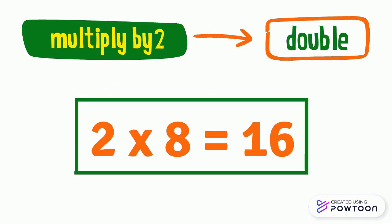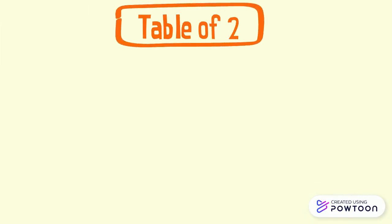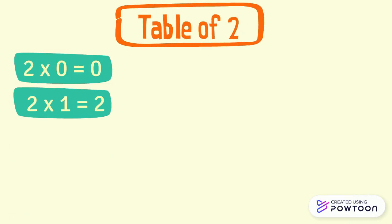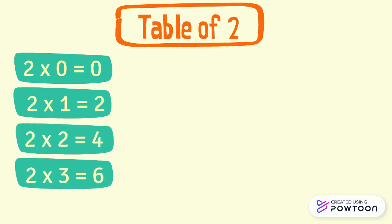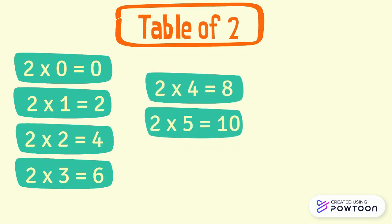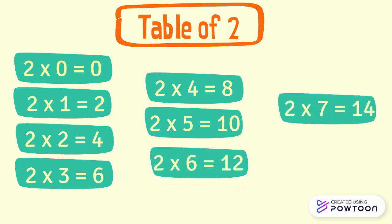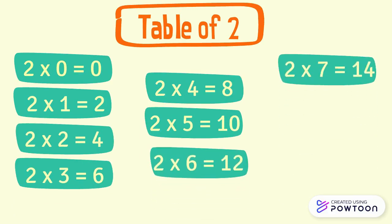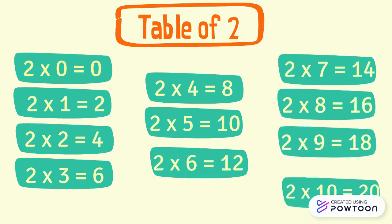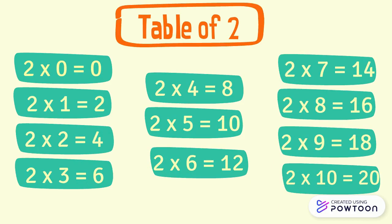You should study by heart the multiplication table of 2. 2 times 0 equals 0. 2 times 1 equals 2. 2 times 2 equals 4. 2 times 3 equals 6. 2 times 4 equals 8. 2 times 5 equals 10. 2 times 6 equals 12. 2 times 7 equals 14. 2 times 8 equals 16. 2 times 9 equals 18. And 2 times 10 equals 20.